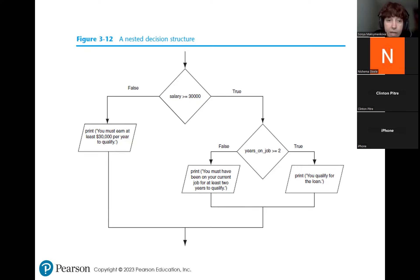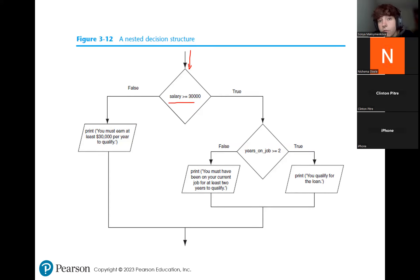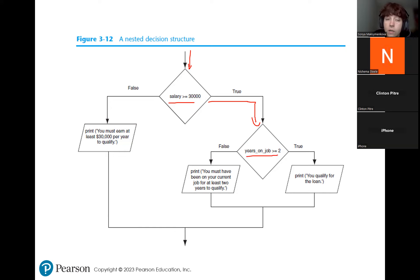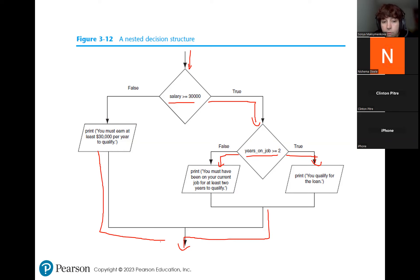In the flowchart, our first check is: is salary greater than or equal to $30,000? If not, we immediately exit and print 'you must earn at least $30,000 per year to qualify.' If that condition is true, we move to the next check: are years on the job greater than or equal to two? Following the true arrow, if it evaluates to true, we print 'you qualify for the loan.' If false, we print 'you must have been on your current job for at least two years to qualify.'